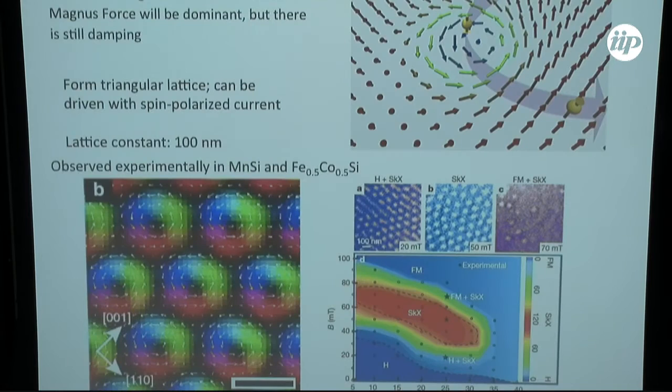So, then this was followed up by various kinds of direct imaging experiments, such as the Lorentz microscopy here. Here you have, again, a nice, beautiful triangular lattice. And here's the phase diagram showing where you get skyrmions in this particular kind of system. You can see, at low fields, you have stripes coexisting with skyrmions. Then you have a nice skyrmion lattice here that's somewhat disordered. Then at high fields, it's a ferromagnetic state.